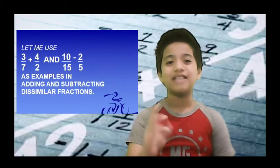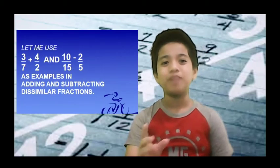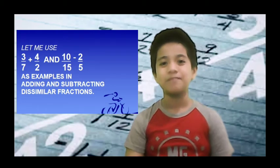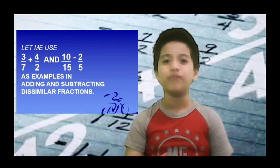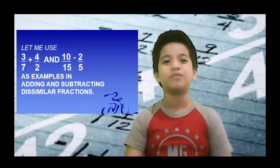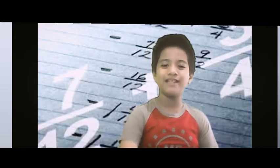Now let us do the easy method. I will use 3 sevenths plus 4 halves, and 10 fifteenths minus 2 fifths as examples in adding and subtracting dissimilar fractions. I would like to share the screen with you so it will be easy for us to see how it is done.